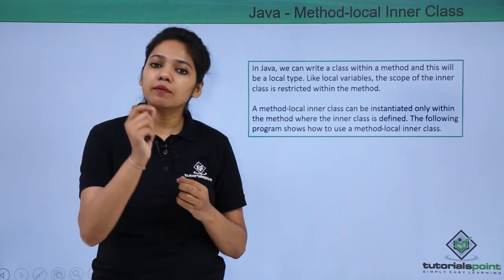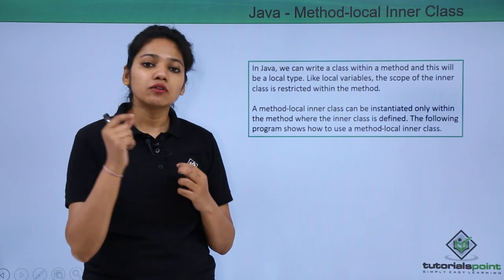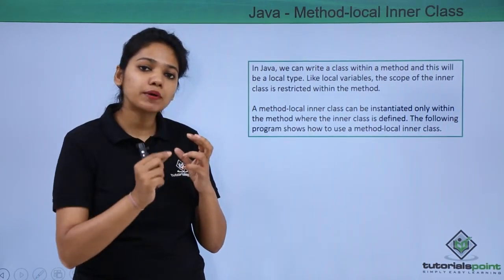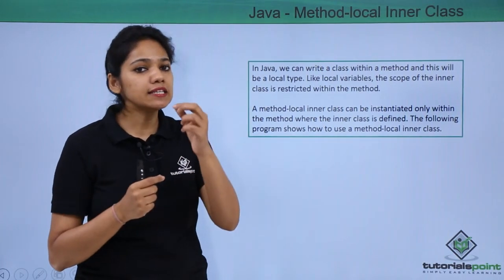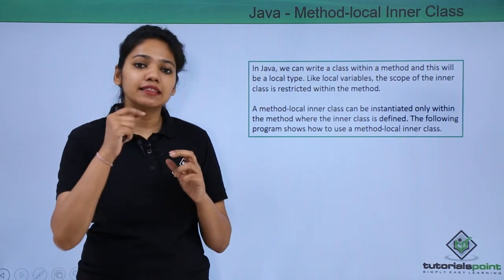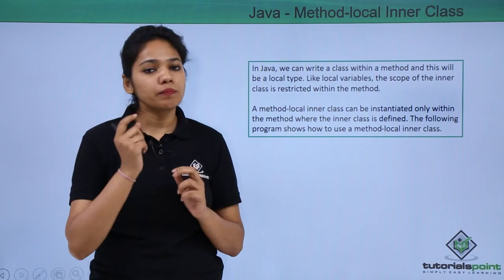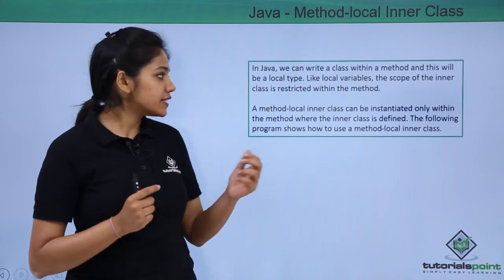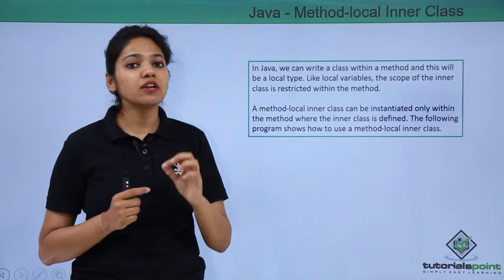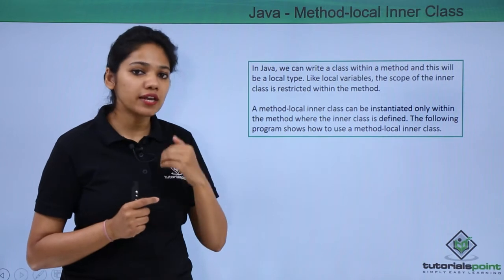For example, in a print method you have created a variable called int num equal to 10. This integer is a local variable to that particular print method. Similarly, if you create a nested class inside this print method, it becomes local to that method and cannot be accessed outside. A method local inner class can only be instantiated within the method where it is declared.